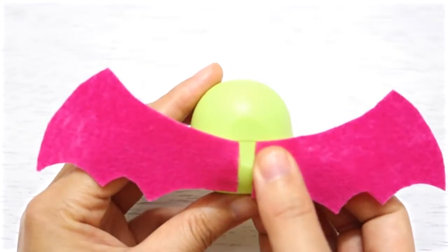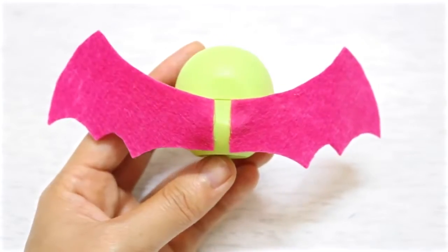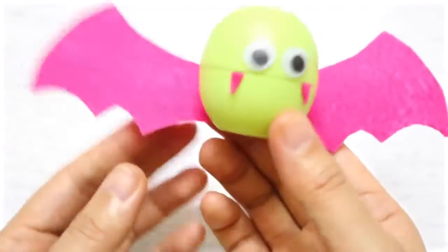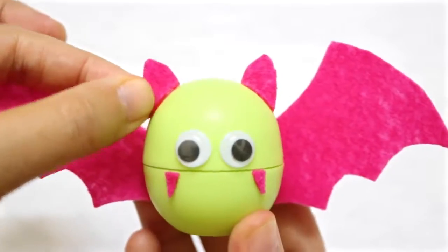Now glue them on the back of the EOS like so. Cut and glue on two ears.